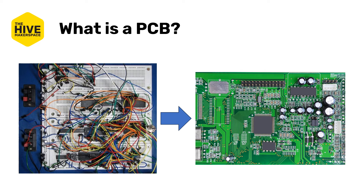PCBs — short for printed circuit boards — eliminate these wires and plug-in components in favor of metaphorically printing the wiring and connection points onto a flat, typically rigid surface, and then soldering the components onto those points for a mechanical and electrical connection. This helps to both alleviate many of the parasitics, though it does not eliminate them, as well as making the board much cleaner for visual acuity and mechanical safety and integration.